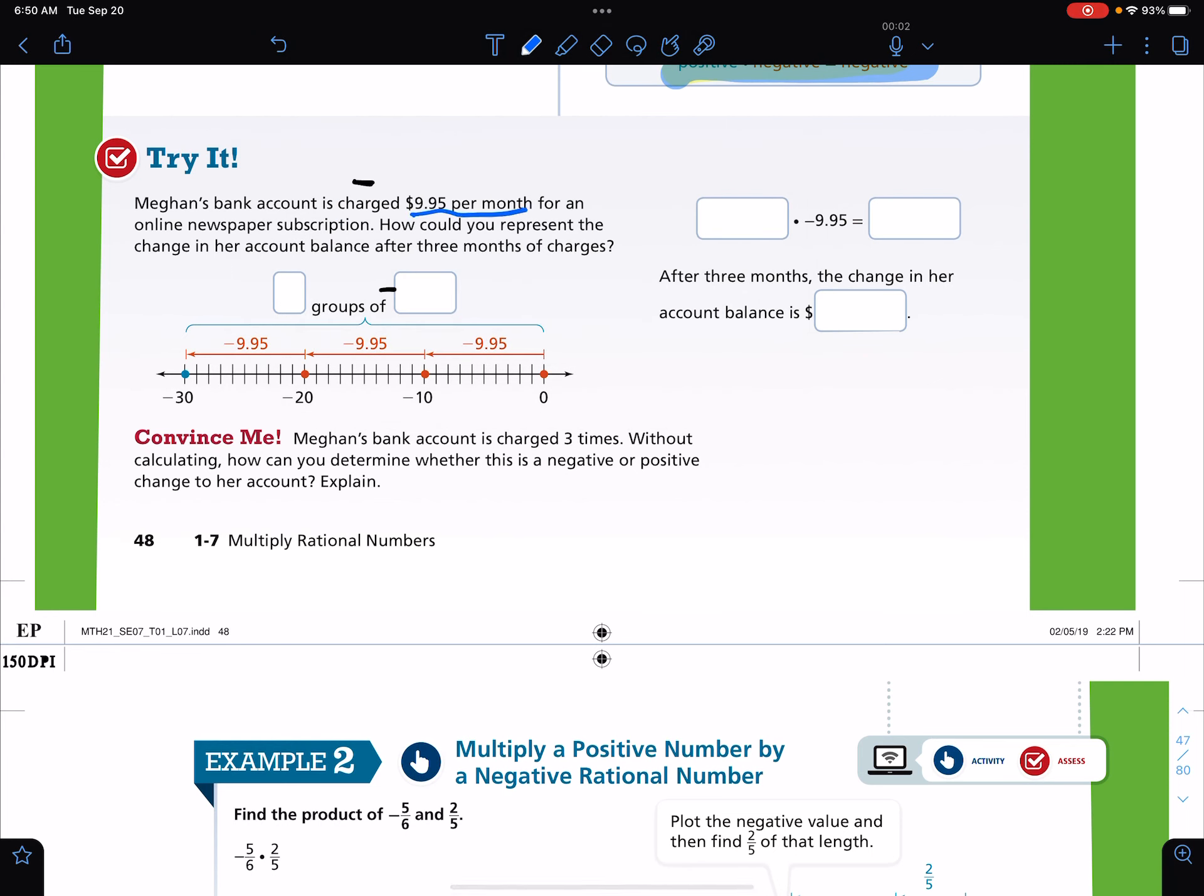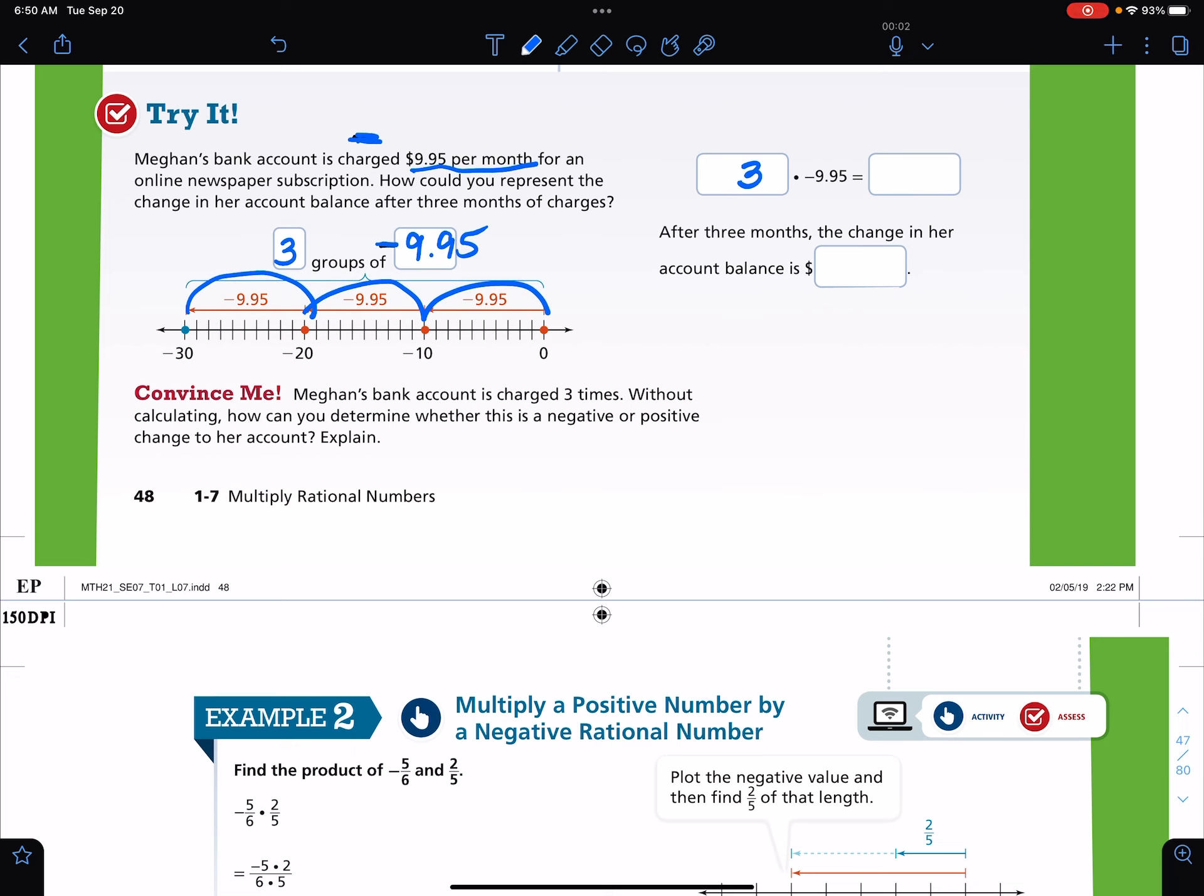Megan's bank account is charged $9.95 per month for an online newspaper. So charged means it's negative. How could you represent the change in her account balance after three months of change? So this shows one group, two groups, three groups of negative $9.95. So that means I have to do 3 times $9.95. I'm going off to the side, and I'm probably not going to talk while I'm doing the multiplication because I always tend to mess it up. So we got 2,985, and it would be negative because it is a positive 3 times a negative 9. So after three months, the change in her account balance is negative $29.85.